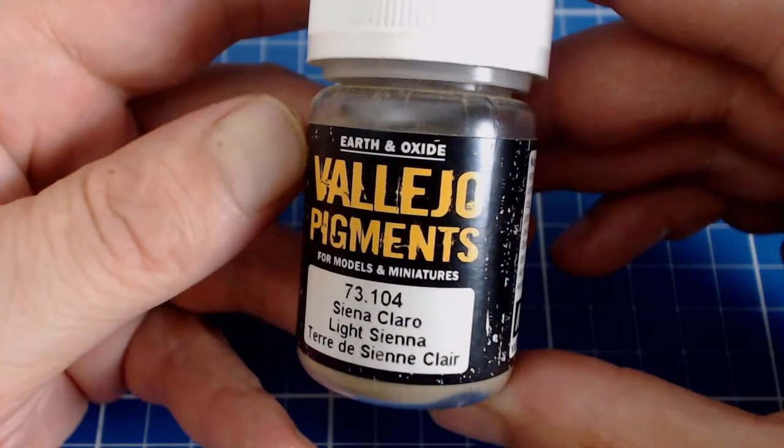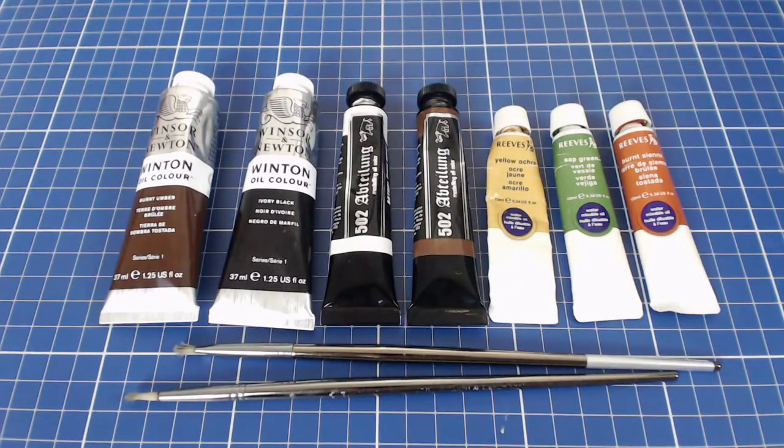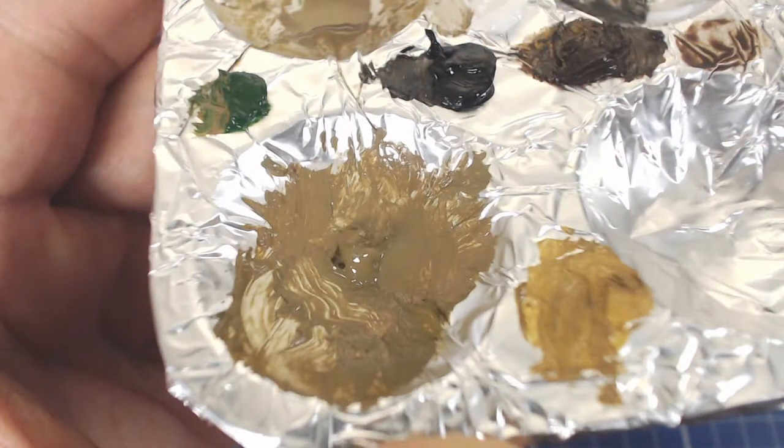To weather our model we use this light sienna pigment powder. We'll also use oil paints and colors left to right: Burnt umber, black, white, brown, yellow ochre, sap green and burnt sienna. We mix a light sienna color to match our pigment powder color. Yellow ochre, burnt umber, white and a touch of sap green are used to get the tone.